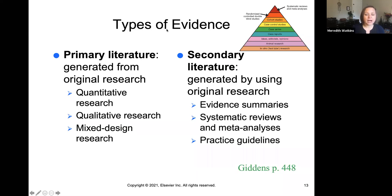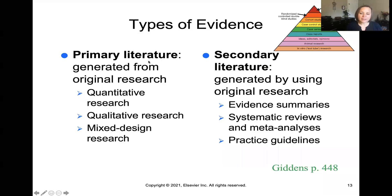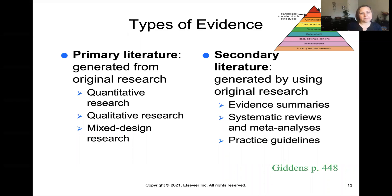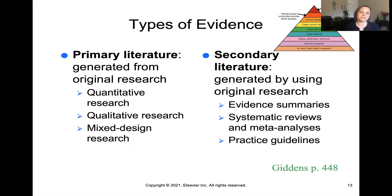There are two main types of evidence. Primary literature is generated from original research, divided into quantitative research — things that are easily defined and measured — and qualitative research, which records things like patients' experiences rather than numerical data. You can also have mixed design, incorporating both. Secondary literature combines and summarizes a variety of different research to show a new perspective on a topic, and can result in practice guidelines informing how nurses should practice based on all available evidence.